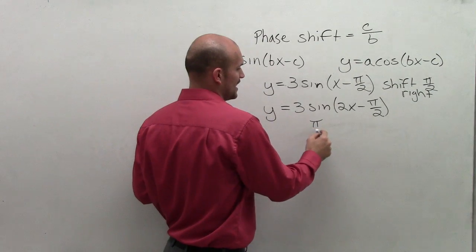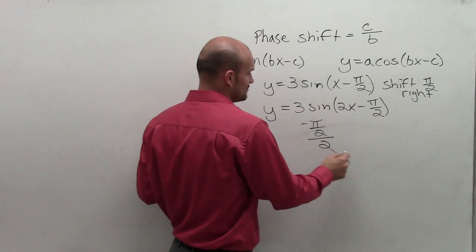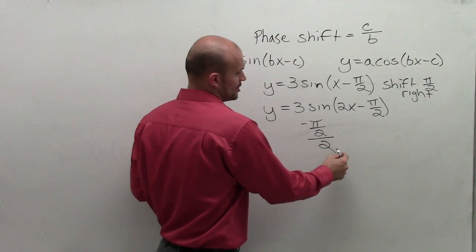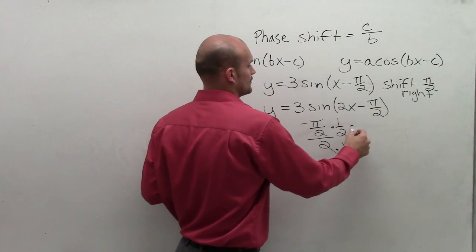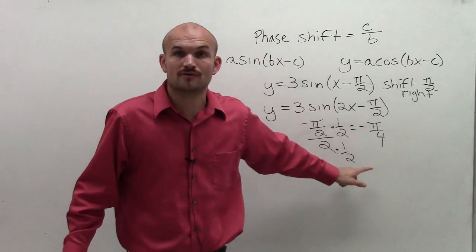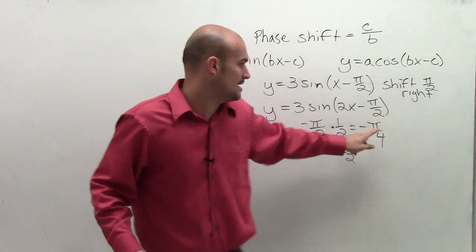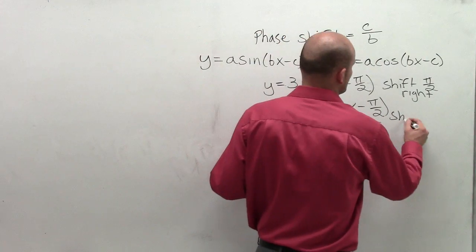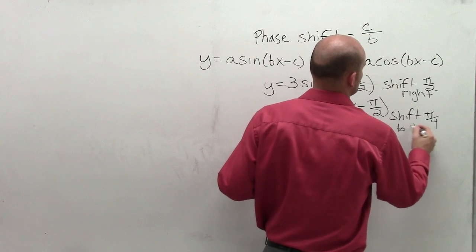So I'm going to take negative pi divided by 2, and divide it by 2. So multiplying by the reciprocal, what I actually have is negative pi over 4. So therefore, instead of shifting it pi over 2 to the right, I'm actually going to shift this graph pi over 4 to the right.